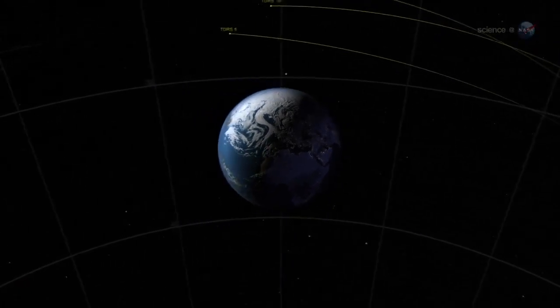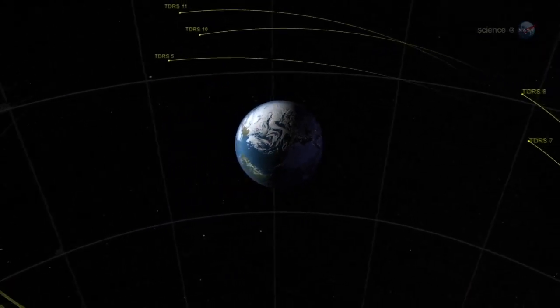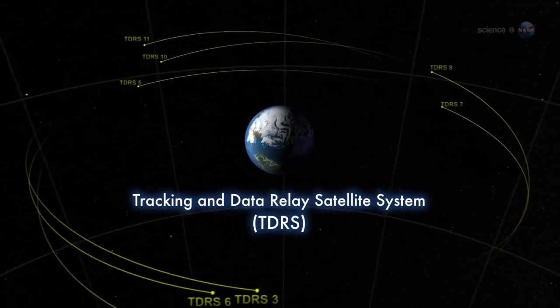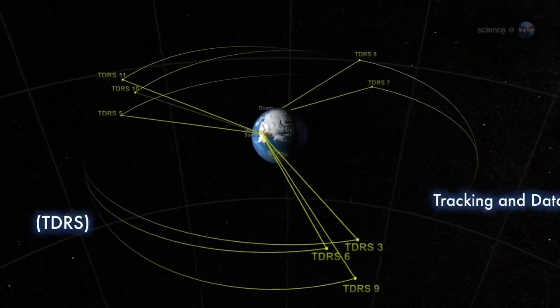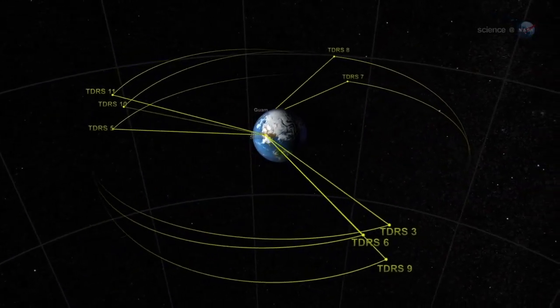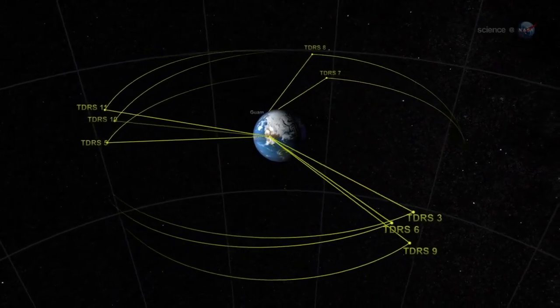Normal operations will begin about 60 days after launch. Data will be downlinked through NASA's Tracking and Data Relay Satellite System to NASA's Precipitation Processing Center in Greenbelt, Maryland, where it will be processed and distributed over the Internet.